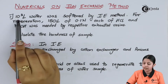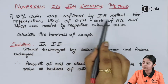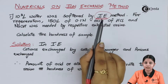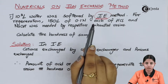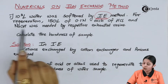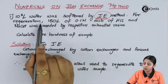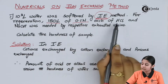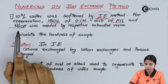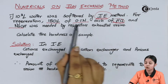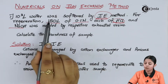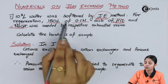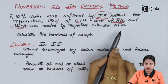The first problem: 10³ liters of water was softened by IE method. IE stands for ion exchange method. For regeneration, 150 liters of 0.1 normal HCl and NaOH each were needed. That means HCl has a normality of 0.1 and volume of 150 liters. Similarly, NaOH has the normality of 0.1 normal and a volume of 150 liters, needed by the respective exhausted resins.